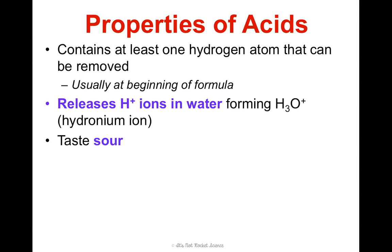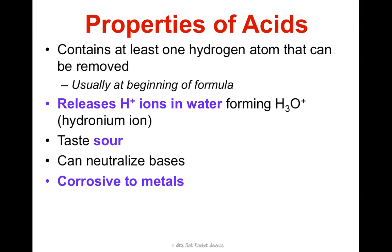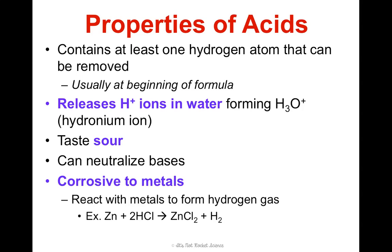Acids often taste sour — think about orange juice or even some sodas. They can be used to neutralize bases. They are corrosive to metals, meaning that they react with metals to form hydrogen gas. Here's an example of zinc and hydrochloric acid making zinc chloride and hydrogen gas. So those are just some properties of acids.